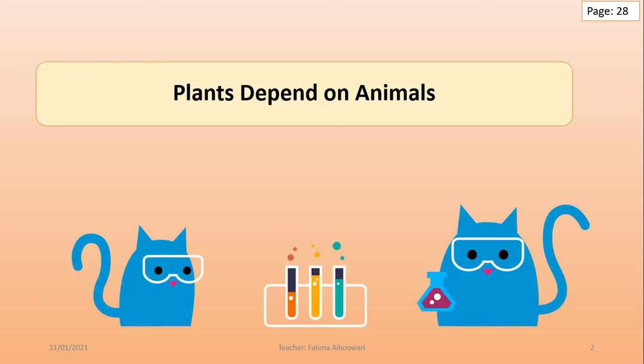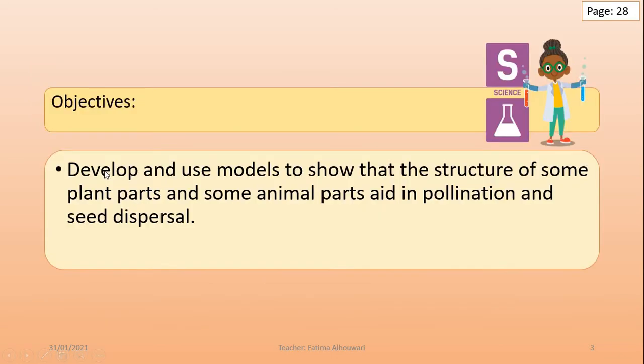Our lesson today is really interesting. It's about plants depending on animals. The objective of our lesson today is to develop and use models to show that the structure of some plant parts and some animal parts aid in pollination and seed dispersal.